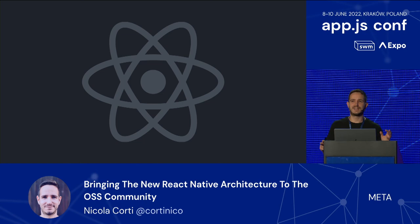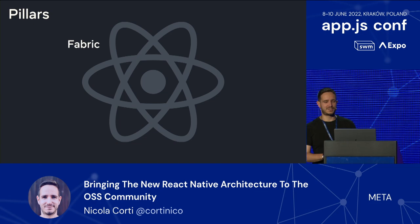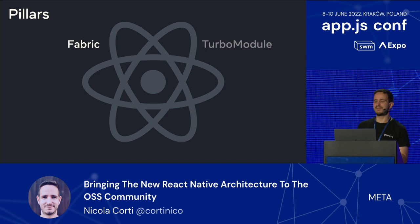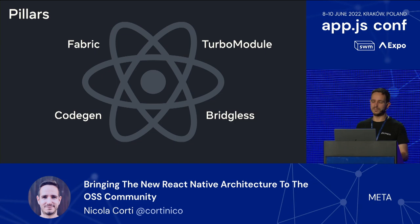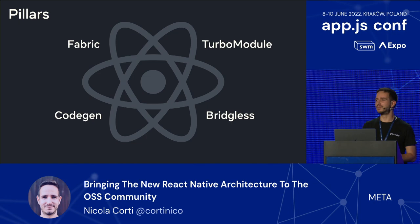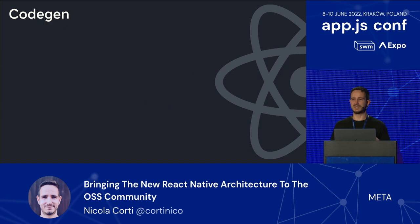Whenever you look at the documentation of the new architecture, you will find several names and components coming up over and over. We tend to refer to those as pillars. The new architecture is composed by several pillars: first, the new renderer called Fabric; then we have the new native module system called TurboModules; we have the Codegen, which is an optional component that essentially generates code for you; and then we have the full bridge-less mode, which is a feature on main that we are still not advocating as much, but more docs for this will come.